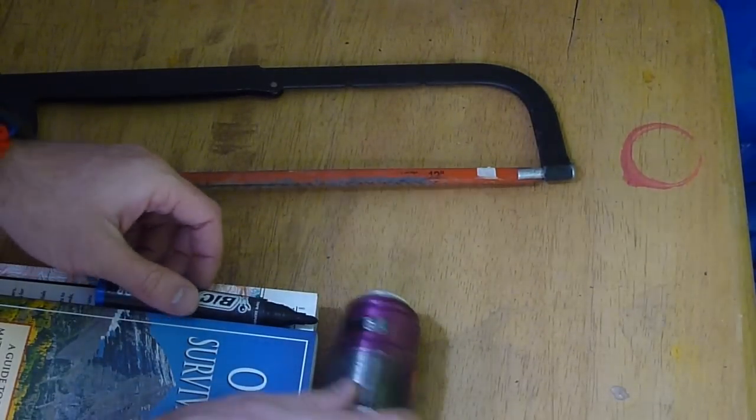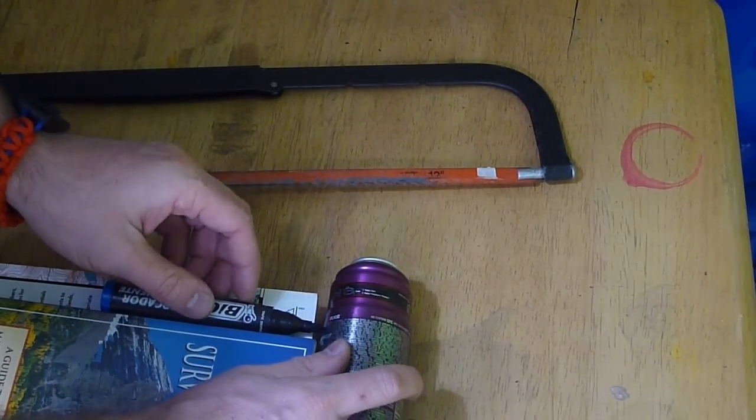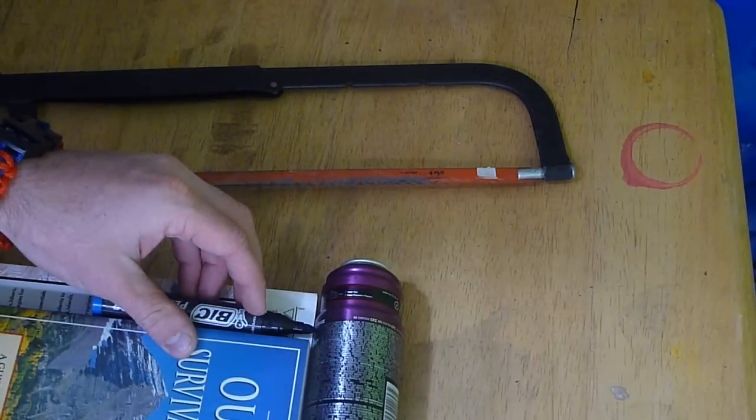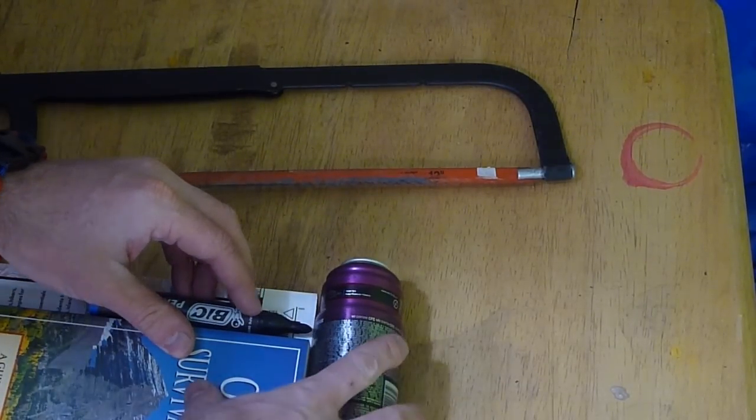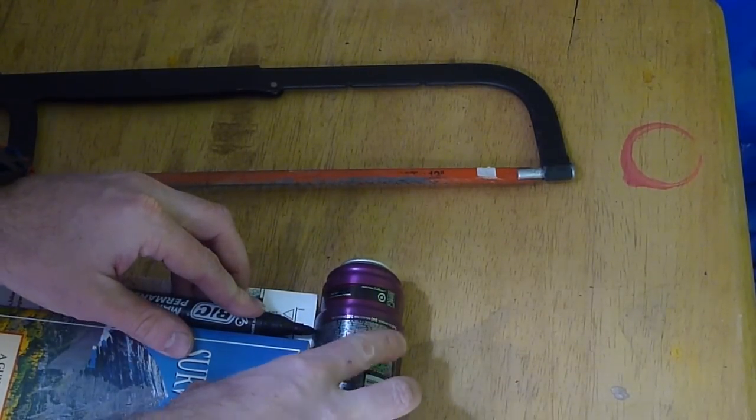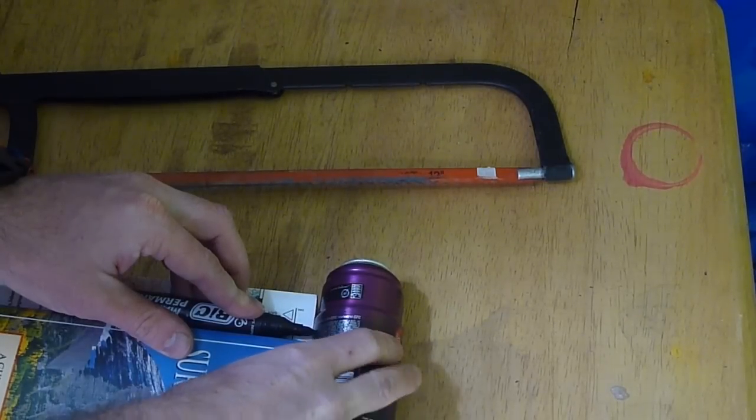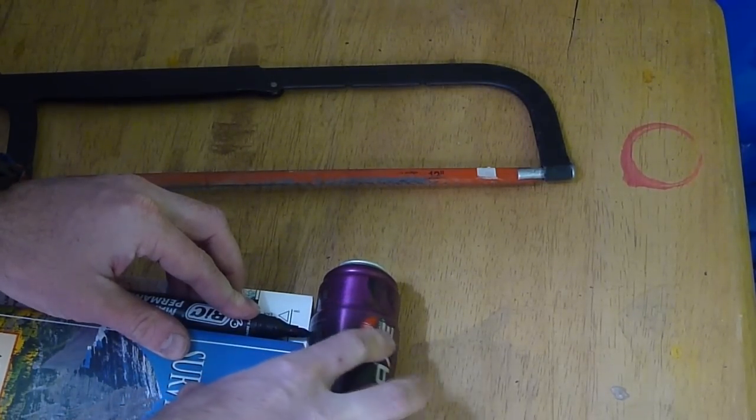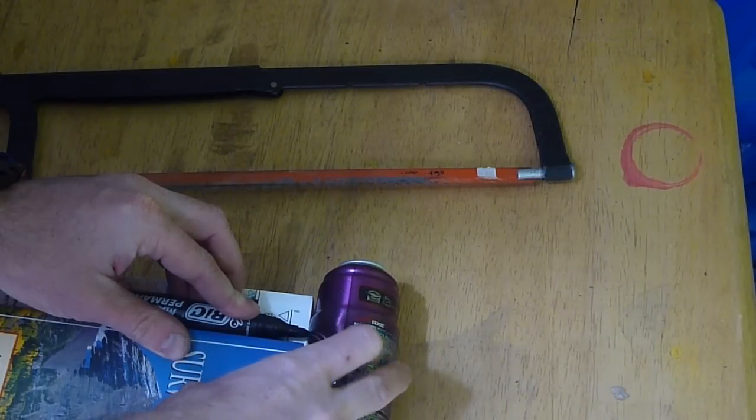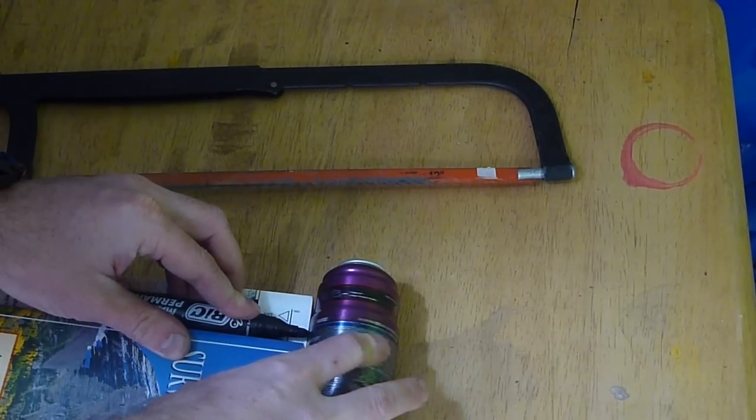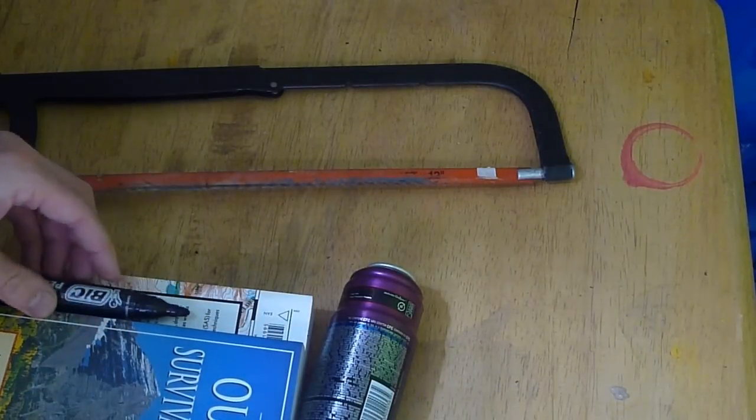So I got my mark on here. I'm gonna line it up with the marker. I'm gonna put that there and now I'm gonna use my two fingers to just spin this can. There it is, you got my straight line all the way around.